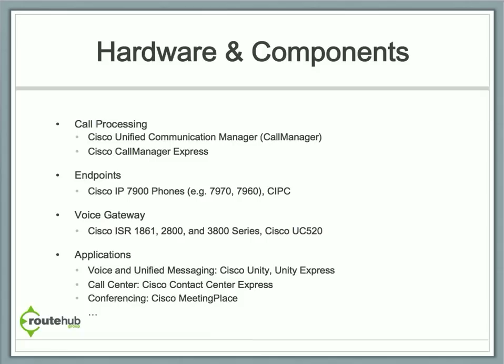The voice gateway connects directly into a PSTN, or a phone provider, for placing and receiving external calls. Some hardware examples are the Cisco ISR 1861, the 2800 series, the 3800 series, and the Cisco Unified Communications 520 model, recommended for small and SMB businesses.